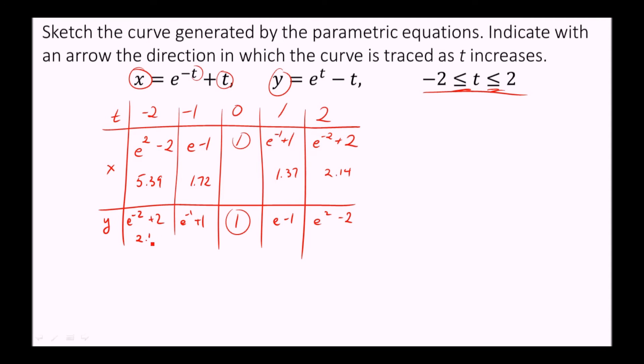Then we have 2.14, 1.37, 1.72, and 5.39. Notice the pattern they're reversing, because we have e squared minus two and e squared minus two. Because these formulas are so closely related, they mirror each other in some respects, depending on the sign of the t value.